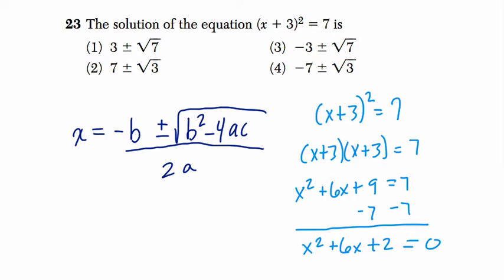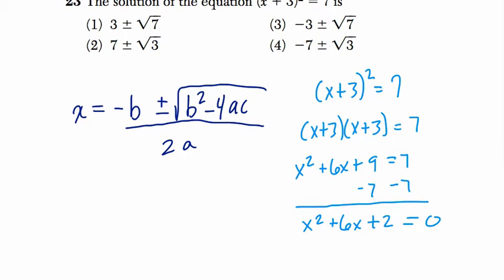Once you have this form right here, once you have the standard form, a is the coefficient of x squared. So a is 1. b is the coefficient of x, so b is 6. And c is the constant at the end, so c is 2. Then we plug this into our formula.